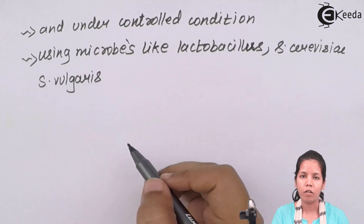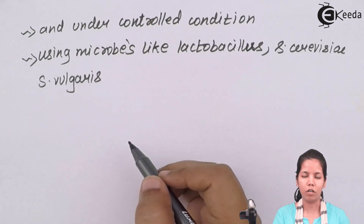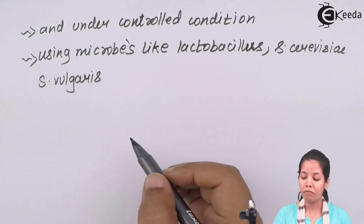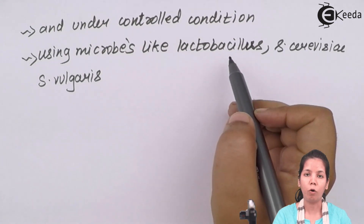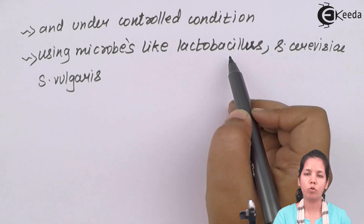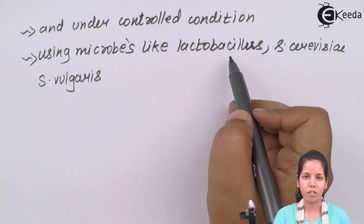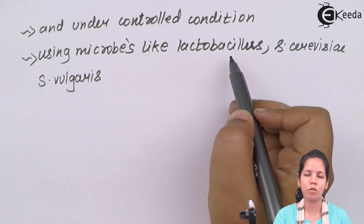These microbes together act to constitute and make the dairy products, including all fermented and Greek yogurt products. Inside a Greek yogurt or curd, there are 1.5 million of these Lactobacillus bacteria, and this Lactobacillus acts on the lactose sugar present inside the milk to convert it into lactic acid, giving curd its characteristic texture and sourness.